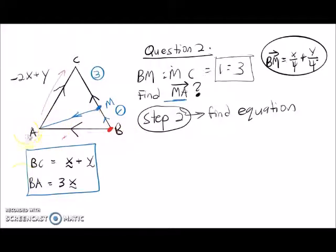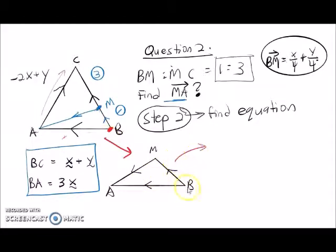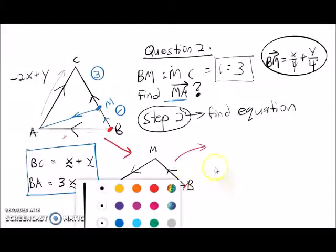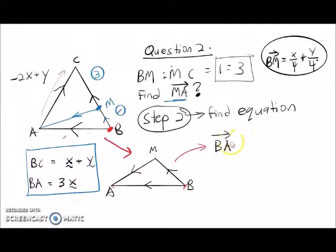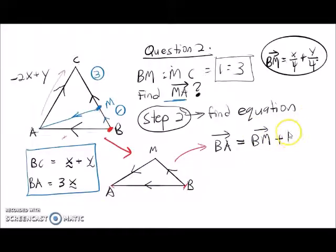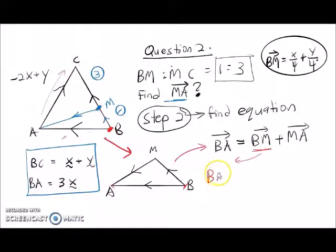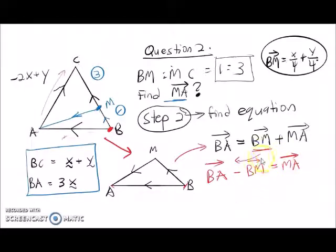For step 2, we find the equation for the smaller triangle involving BM and A. The shortcut in this triangle is BA — put the arrow. BA equals BM plus MA. This is our equation for the smaller triangle. We have to find MA, so we move BM to the opposite side: MA equals BA minus BM.